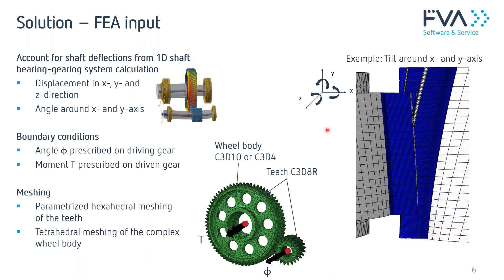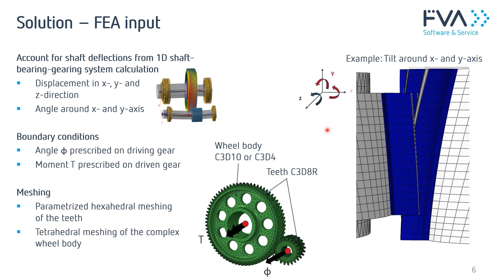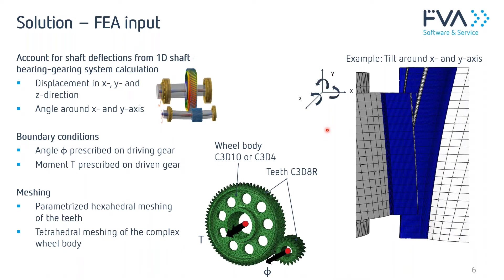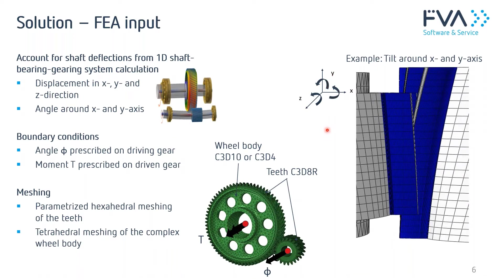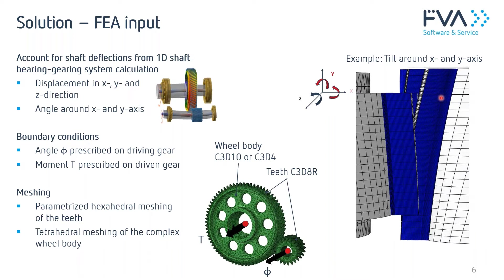If we apply a tilt around two axes, the gears come into a slightly different contact scenario, which will be accounted for during computation. The boundary conditions, apart from these deflections, involve applying the moment at the driving gear, and on the driven gear, we apply certain small angle increments. This constitutes the temporal discretization of our simulation.